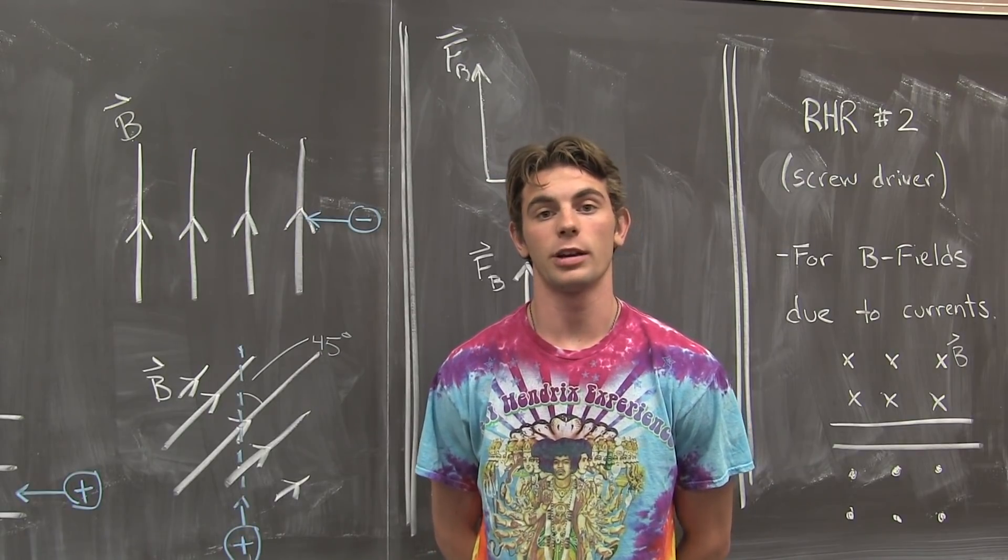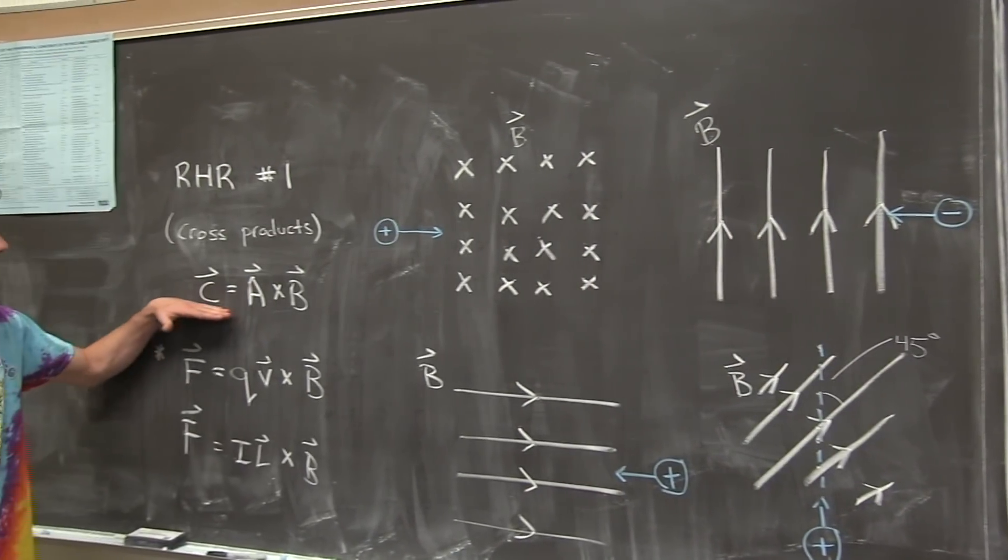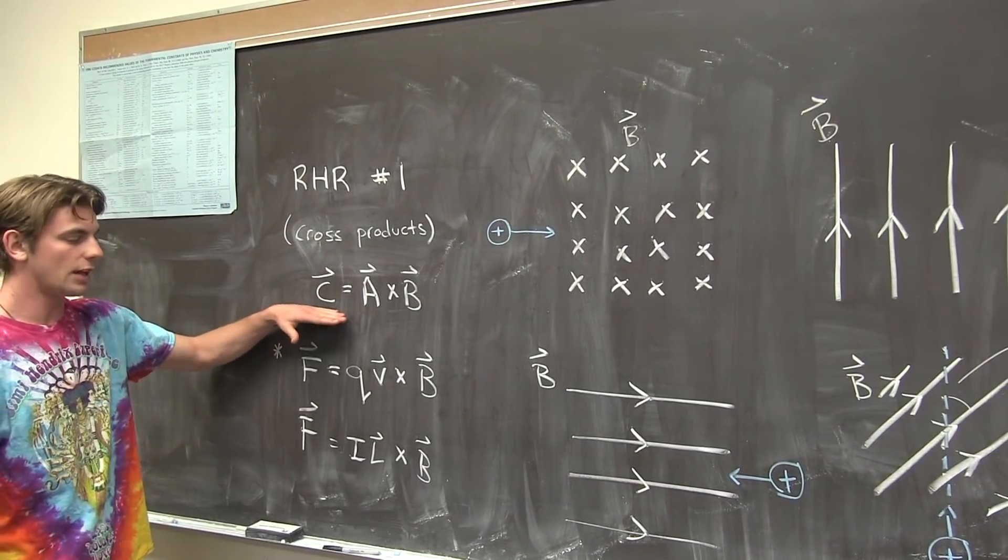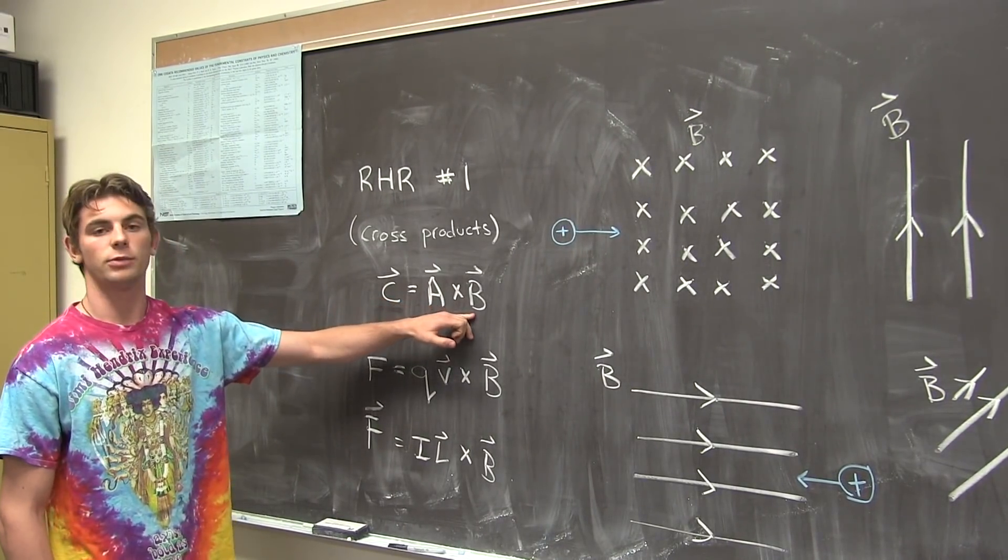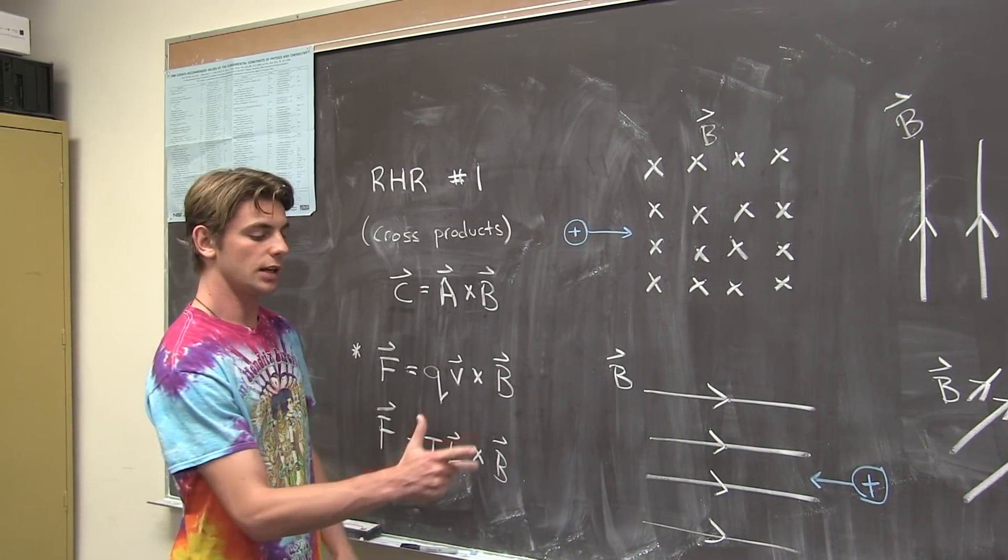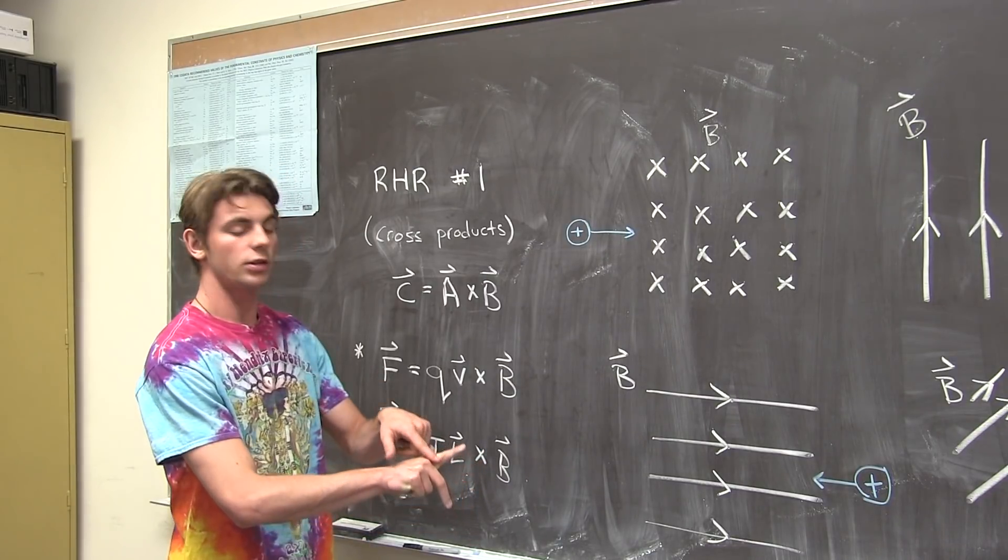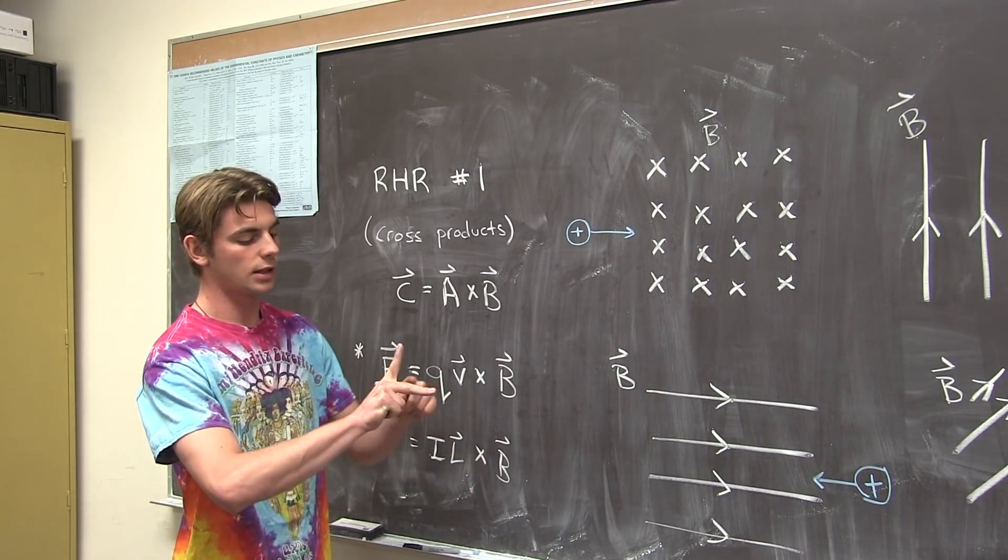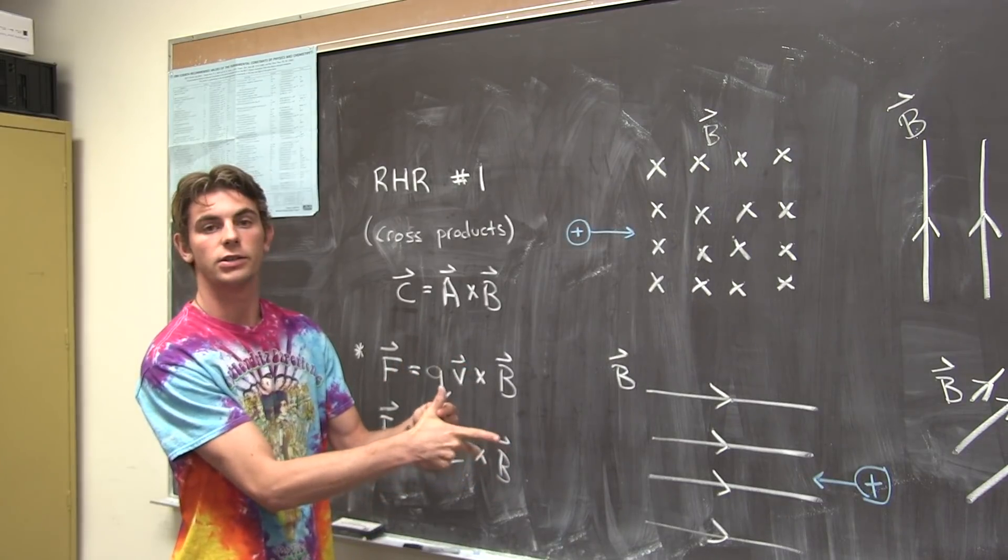For that, we're going to be considering all cross product equations. So for this, we'll have some resultant vector c is equal to a crossed with b. And how I always like to do it is with my thumb, index finger, and middle finger. The index finger represents vector a, the middle finger represents vector b, and the resultant vector is your thumb c.